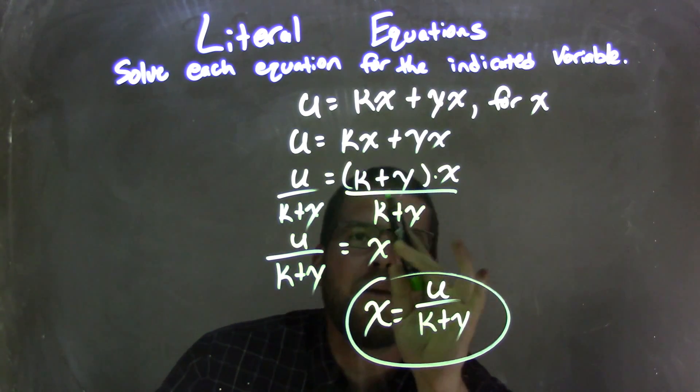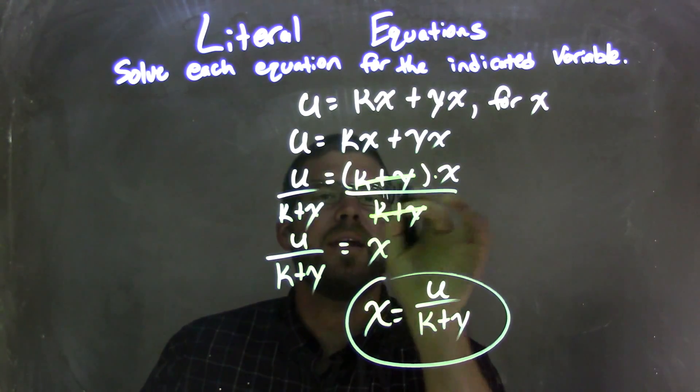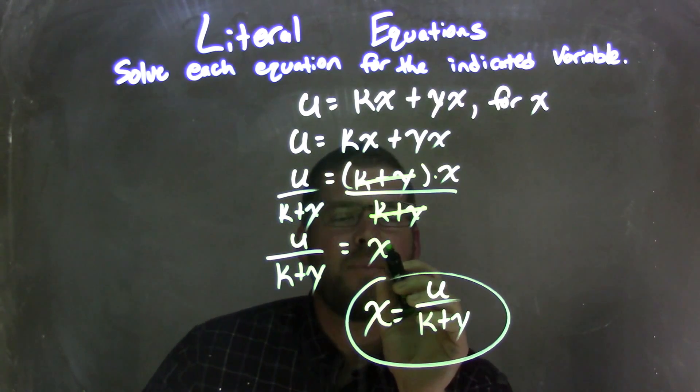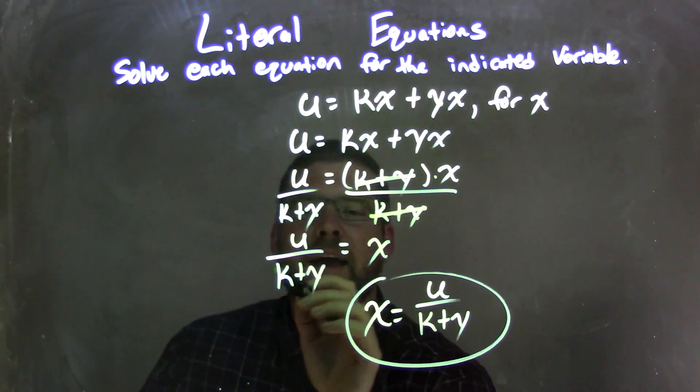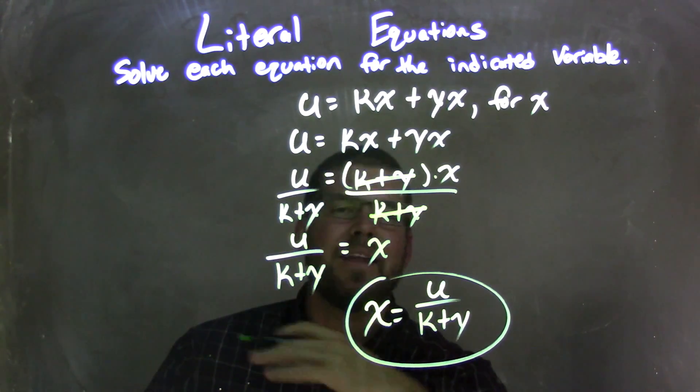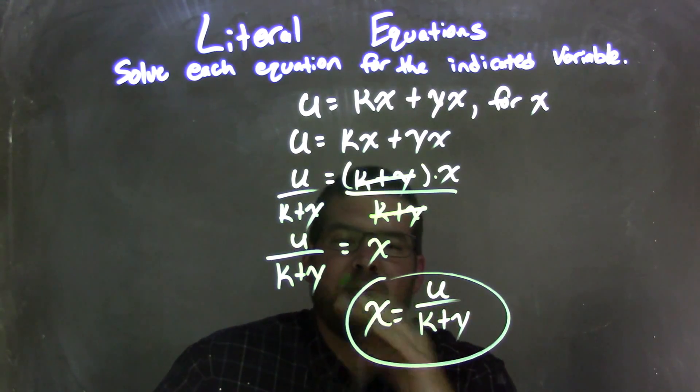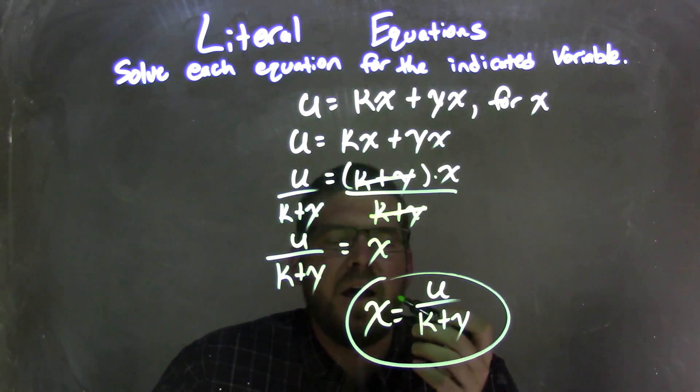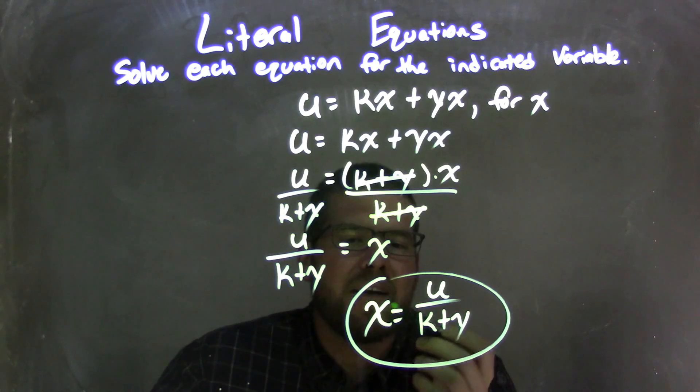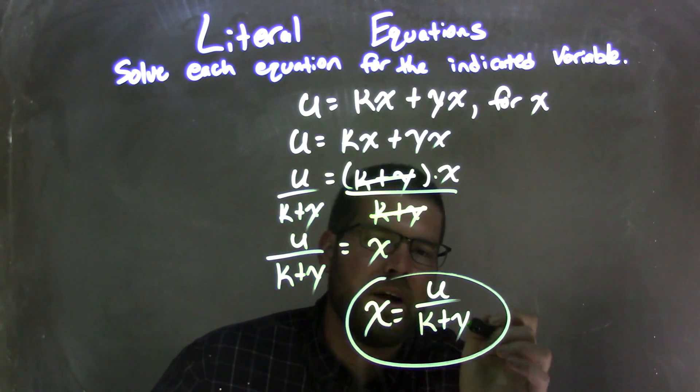That allows me to divide by k plus y to both sides, eliminating it there, leaving me with x by itself on the right and u over k plus y on the left. I like to see x written first, so my final answer is x equals u over k plus y.